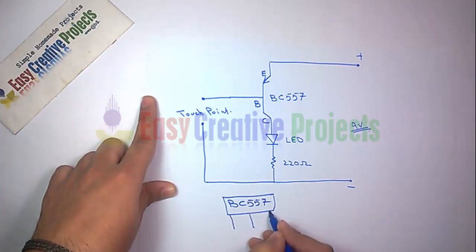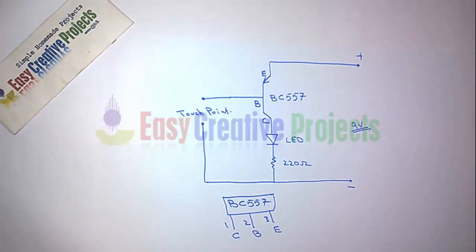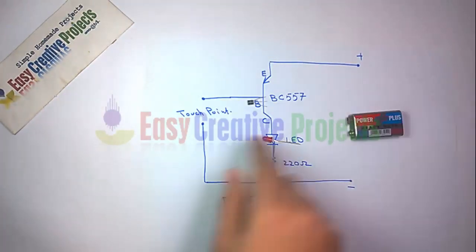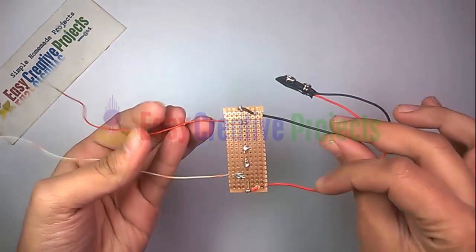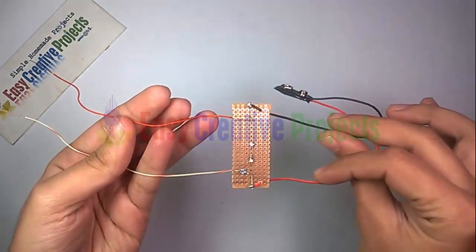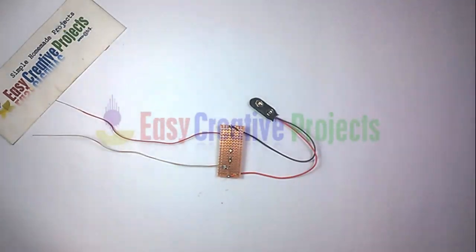The BC557 has three pins: first is collector, second is base, and third is emitter. Now connect all components on the PCB board using the circuit diagram. The project is ready for your test.